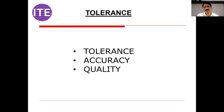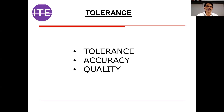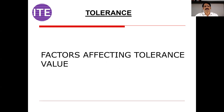When you are providing a tolerance to a particular dimension, there are various levels we have to understand. As a design engineer, it is not just creating a drawing. When you provide the tolerance, various thought processes are required. When you provide a particular tolerance, say plus minus 10 micron, the next thought process is: how am I going to achieve this, which manufacturing process am I going to use? At the same time, you have to understand the cost factor. We will understand which factors affect the tolerance value.